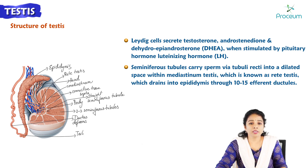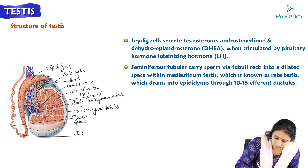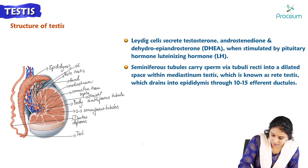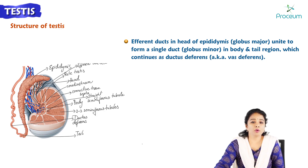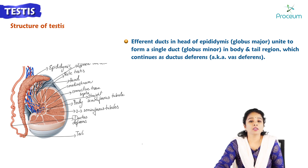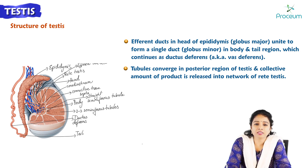The rete testis drains into the epididymis through 10 to 15 efferent ductules. The efferent ducts in the head of the epididymis, considered as the globus major, unite to form a single duct called the globus minor in the body and tail region, which continues as the ductus deferens, also known as the vas deferens. The tubules converge in the posterior region of the testis and the collective product is released into the network of rete testis, completing the anatomy of testis.